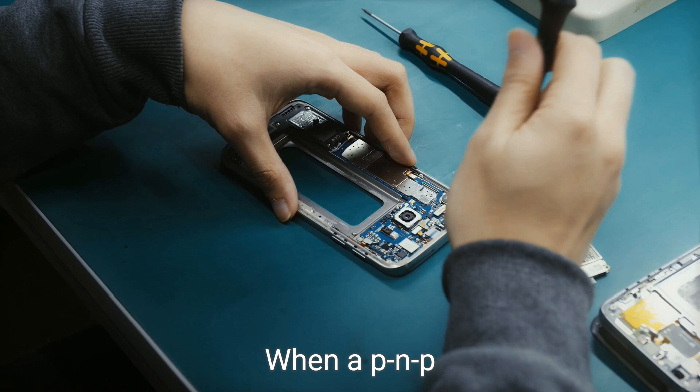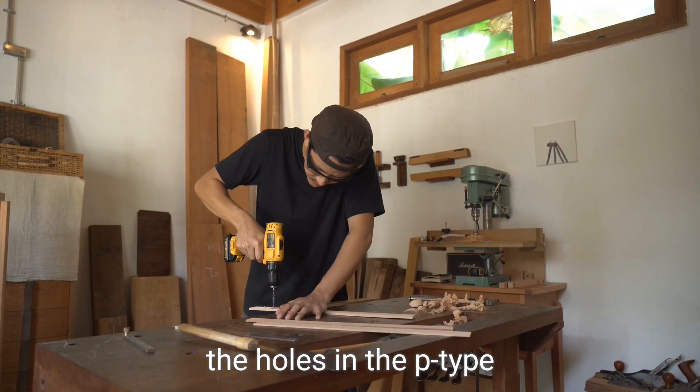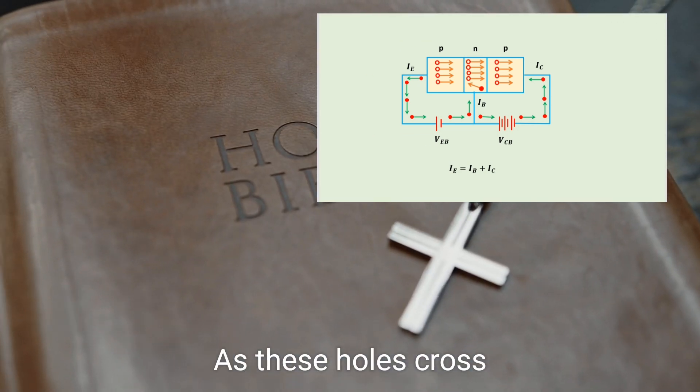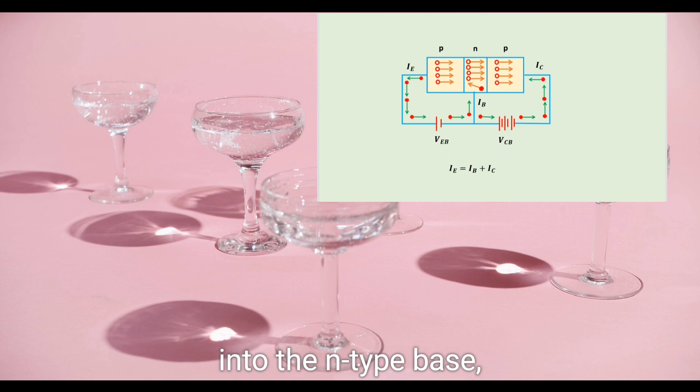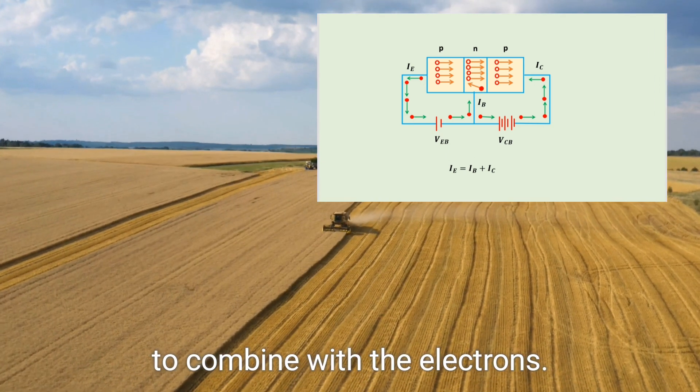When a PNP transistor is forward biased, the holes in the P-type emitter flow towards the base, creating the emitter current. As these holes cross into the N-type base, they have a tendency to combine with the electrons.